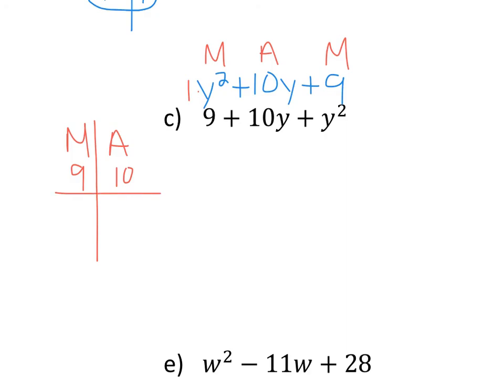So I need factors of 9. I have 1 and 9, and 3 and 3. Those are the only factors of 9. Then I need to add them together. 1 plus 9 is 10. 3 plus 3 is 6. My a is 10, so I want that first set there. And you don't have to list all the factors every time. Just list them and add them as you go. And when you get your answer, you get the pair that works, you can stop. So then this time, I have my two parentheses. y is the variable. And I have plus 1 and plus 9.